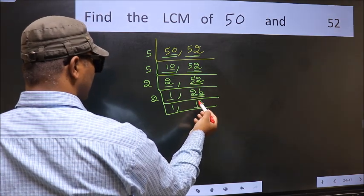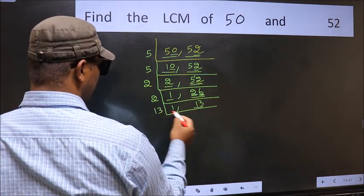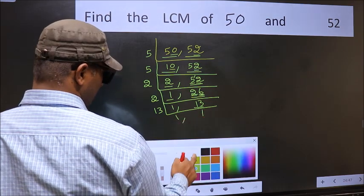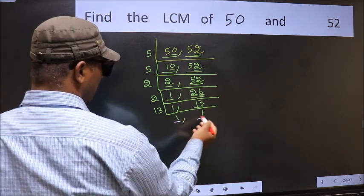Now here we have 13. 13 is a prime number, so 13 times 1 is 13. So we got 1 in both places.